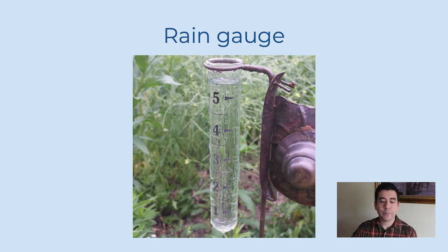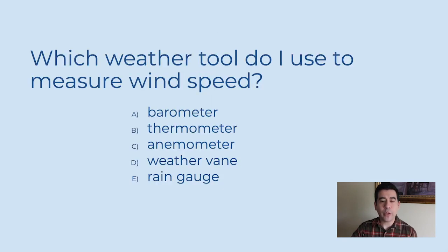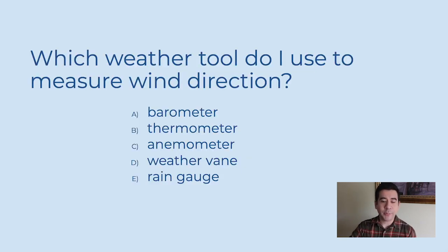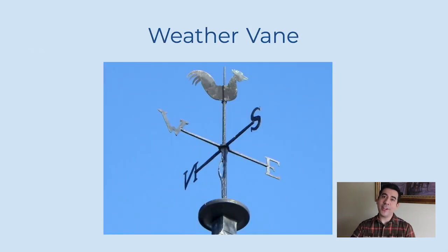Here's another one. Which weather tool do I use to measure wind speed? That's right, it's an anemometer — anemometers measure wind speed. Last question: which weather tool do I use to measure wind direction? You did it — a weather vane! A weather vane measures wind direction.